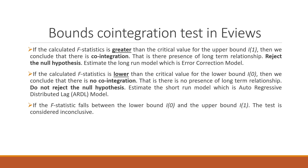We then carry out the bounds test in EViews. The thumb rule is: if the calculated F-statistic is greater than the critical value for the upper bound I(1), we conclude there is cointegration and a long-term relationship exists. If the F-statistic is lower than the critical value for the lower bound I(0), there is no cointegration. If the F-statistic falls between the lower and upper bounds, the test is considered inconclusive.